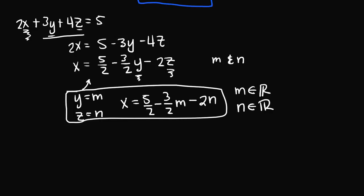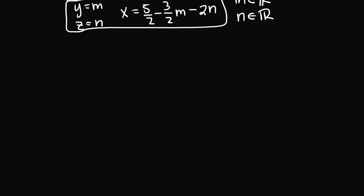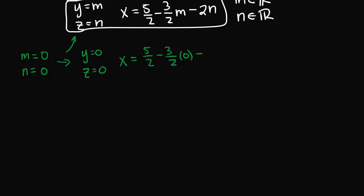We can use this parametric representation to obtain any particular solution. For example, if we let m equal 0 and n equal 0, then y equals 0, z equals 0, and x equals 5/2 minus 3/2 times 0 minus 2 times 0, which is just 5/2. So the particular solution in this case is x equals 5/2, y equals 0, z equals 0.